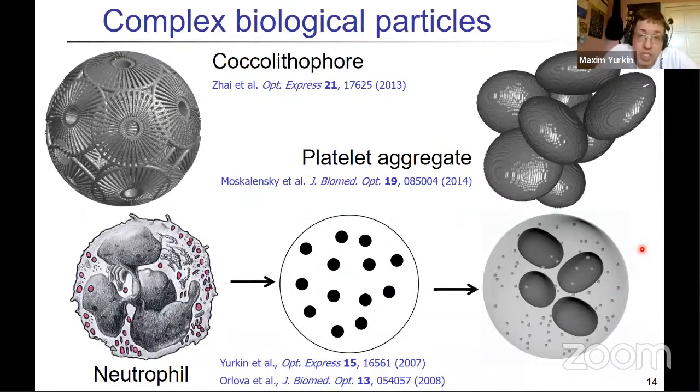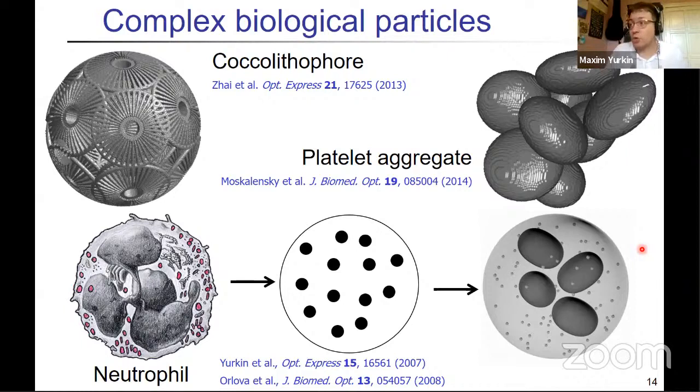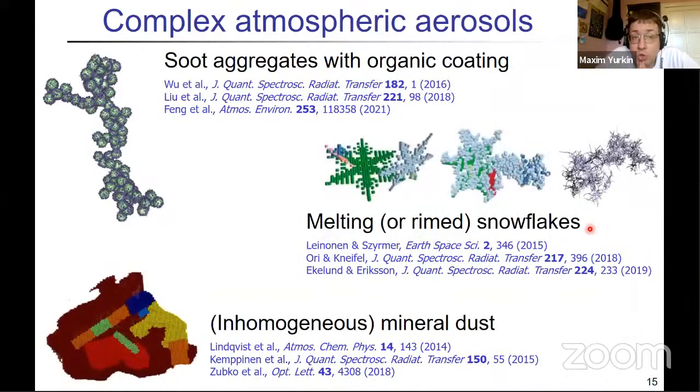Then, as I promised you, some beautiful pictures. Surely DDA is useful for simple particles, but I will mostly show the most complex ones, because that's where you definitely need volume integral equation, volume discretization method, at least. It can be DDA or FDTD or anything else. And for biological particles, actually, the DDA is usually the most computationally efficient method, because the effective index is close to that of the host medium. So here are a few examples here. Then if you go to complex atmospheric aerosols, again, when you have some inhomogeneous particle like melting snowflakes, some coating on top of aggregates, then DDA is a method of choice for many researchers, and here you see the examples.